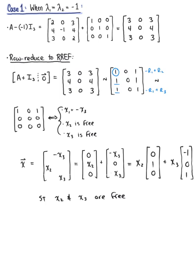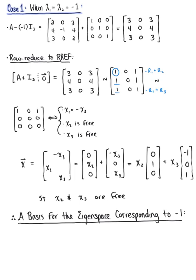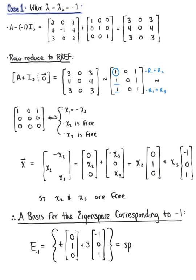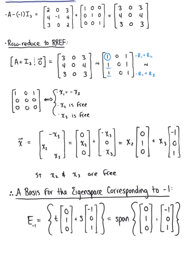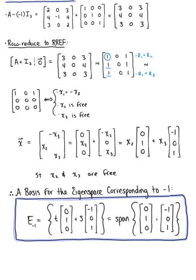From this set of all possible non-trivial solutions, we define a basis for the eigenspace corresponding to lambda sub 1 equals lambda sub 2 equals negative 1. The eigenspace E sub -1 is equal to the set of all scalar multiples of [0, 1, 0] plus all scalar multiples of [-1, 0, 1], or equivalently, the span of {[0,1,0], [-1,0,1]}.